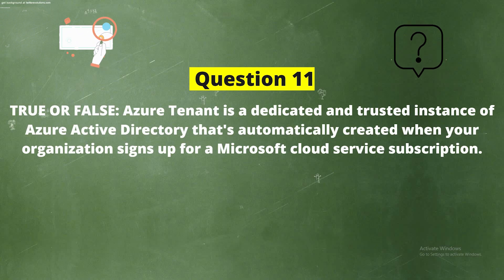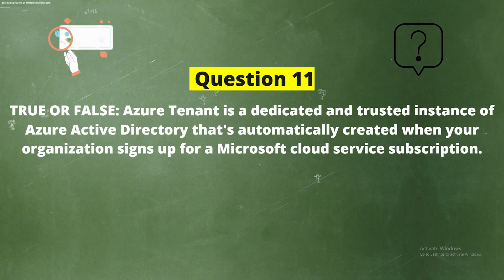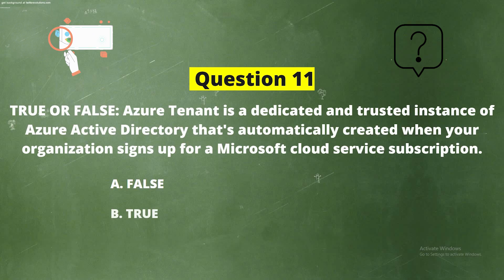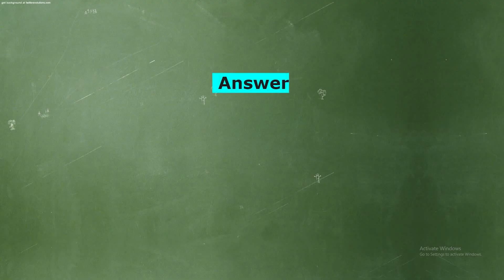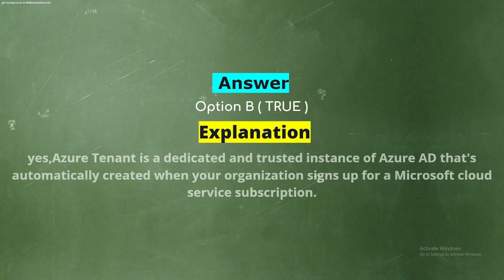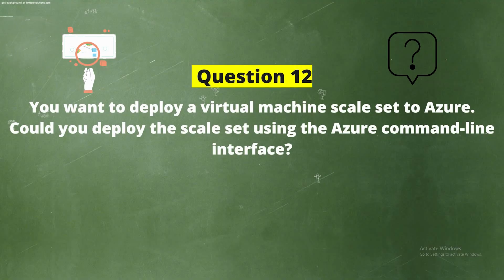Question 11: True or False - An Azure tenant is a dedicated and trusted instance of Azure Active Directory that's automatically created when your organization signs up for a Microsoft cloud service subscription. Options: Option A - False, Option B - True. The correct answer is Option B - True. Explanation: Yes, an Azure tenant is a dedicated and trusted instance of Azure AD that's automatically created when your organization signs up for a Microsoft cloud service subscription.